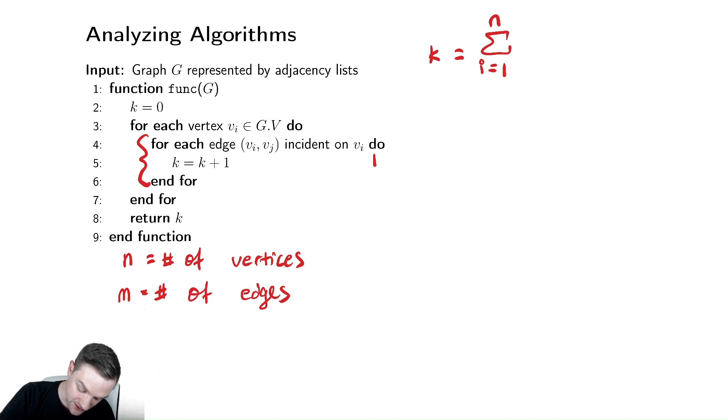This loop iterates the degree of vi times. So I could write this as the sum from j equals 1 to the degree of vi of whatever the cost on the inside is. Here I'm not analyzing the cost of doing this. I'm analyzing the value of k. So every single iteration has a cost of 1 that I am adding to k.